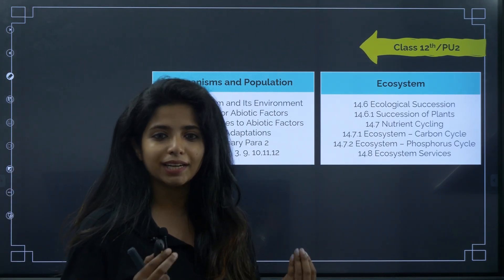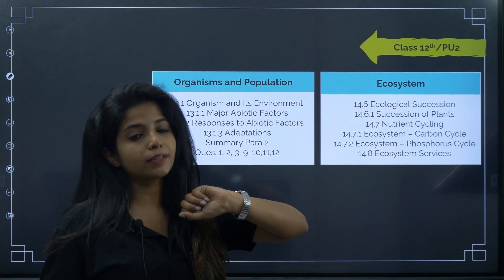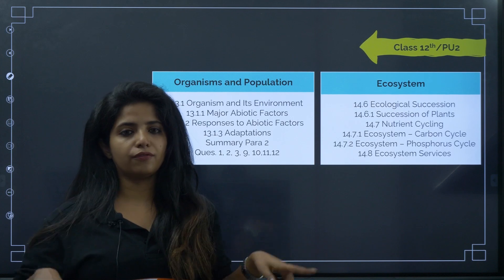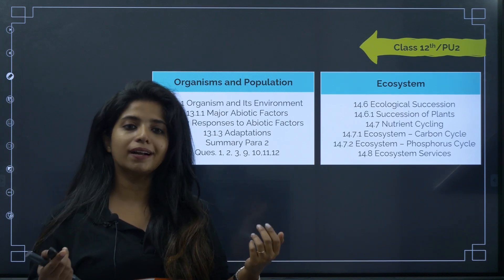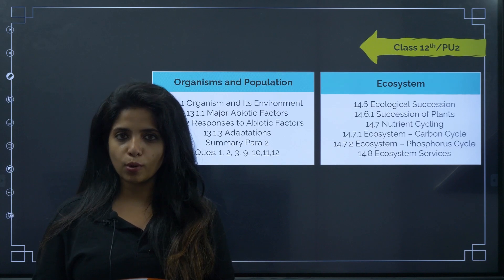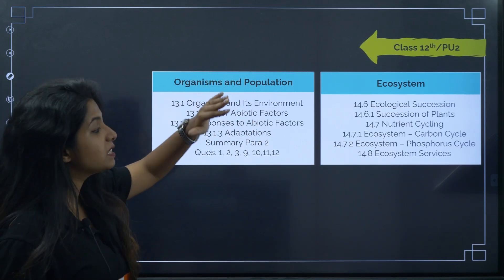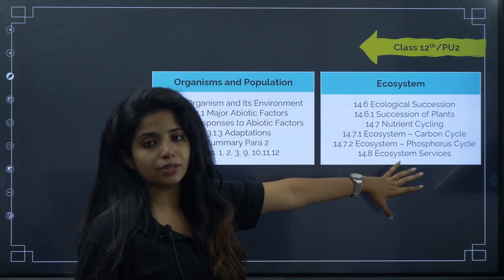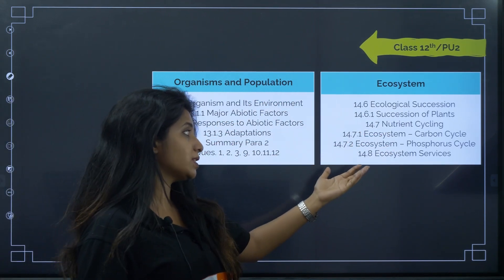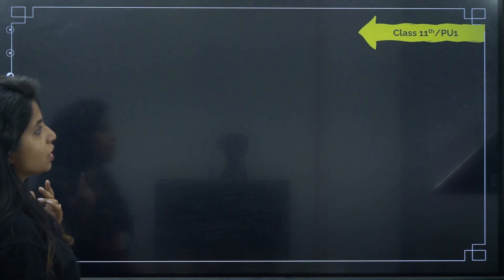Carbon cycle, phosphorus cycle — please don't waste your time studying those deleted topics. I'll put the PDF link with all deleted content in the comment box so you can refer to it easily. Organism and population as a chapter is not fully deleted, but certain topics within it are — nutrient cycling and a few other things are removed, probably because you've already studied them earlier.